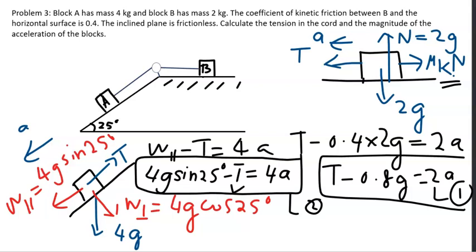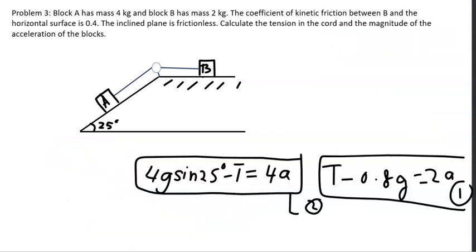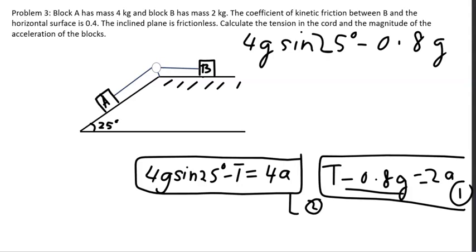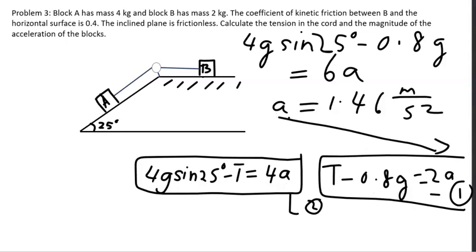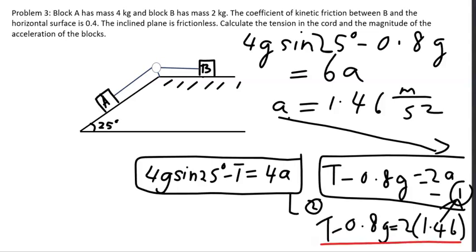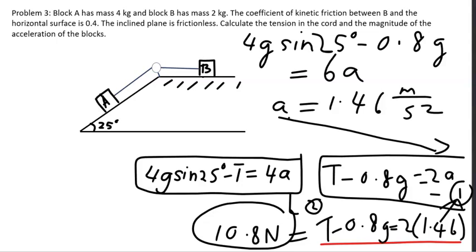We have two unknowns — T and a — and two equations. Adding Equations 1 and 2 eliminates T: 4g sin25° minus 0.8g equals 6a, giving a = 1.46 m/s². Substituting back into Equation 1 yields T = 10.8 newtons. That solves the problem. Thank you for watching.